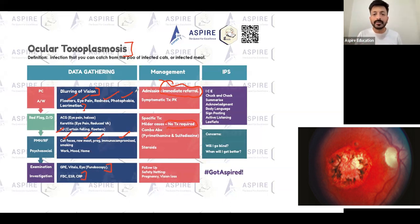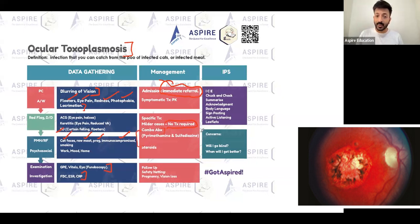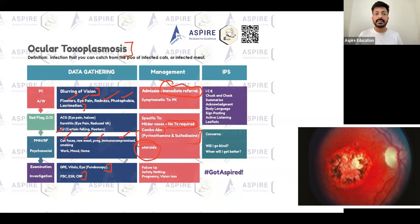Treatment includes painkillers if pain is present. For antibiotic therapy, the usual combination given is pyrimethamine and sulfadiazine. Since there is inflammation, steroids are also given alongside the antibiotic combination.